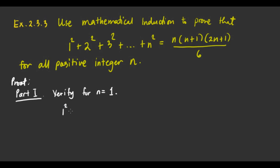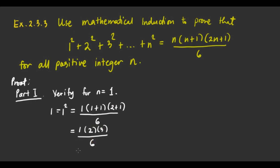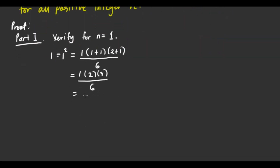1 squared is equivalent to substituting 1: 1 times (1 plus 1) times (2 times 1 plus 1) over 6. That simplifies to 1 times 2 times 3 over 6. And 1 times 2 times 3 is 6 over 6, which is equivalent to 1. Hence it's true for n equals 1. Therefore, true for n equals 1.